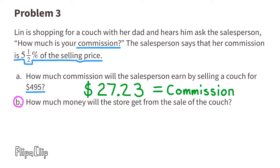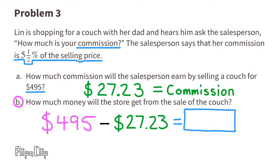Part B: how much money will the store get from the sale of the couch? Since the store needs to pay a commission to the salesperson, we need to subtract the commission from the $495. $495 minus $27.23 equals $467.77. That's the amount of money that the store will get from the sale of the couch.